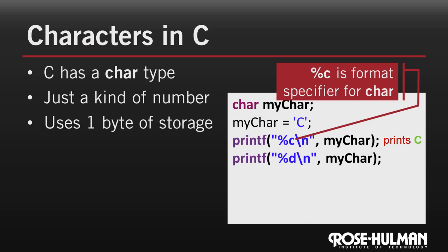Now the next line, we use our integer format specifier. Remember that these characters are actually just a type of number, so the second line here actually prints out the number 67. In this third printf, we pass 67 as the value, but we use the character format specifier, so that third one actually prints out a C.